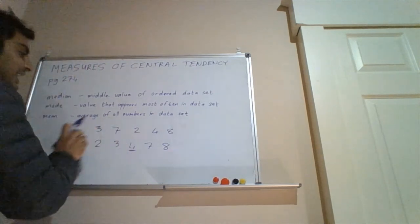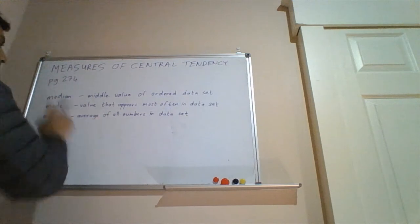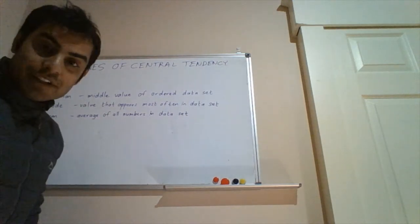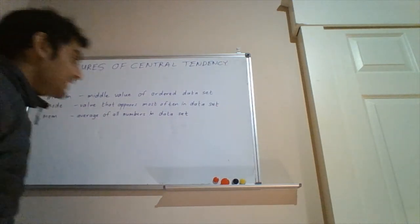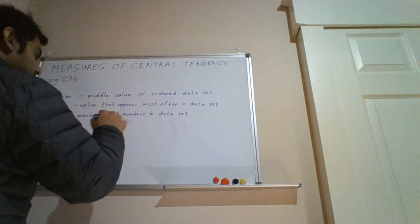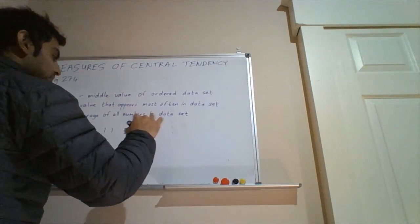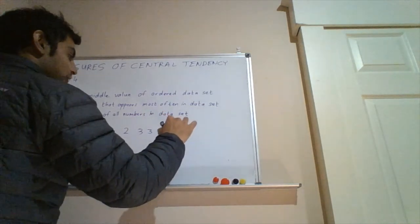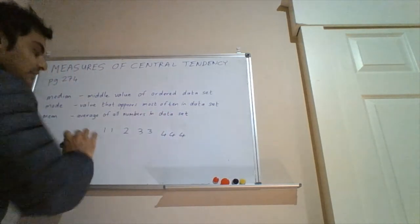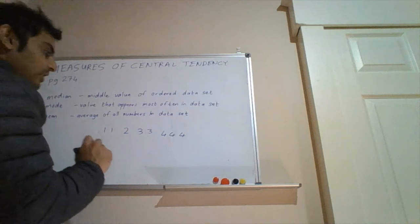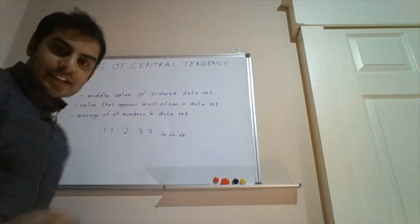Next, we have the mode. So the mode is the value that appears most often in a data set. So for example, if we have the numbers 1, 1, 2, 3, 3, 4, 4, 4, 4, these are ordered, and the most common value in the data set is the number 4.